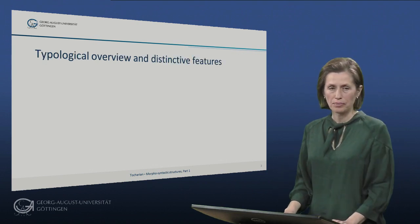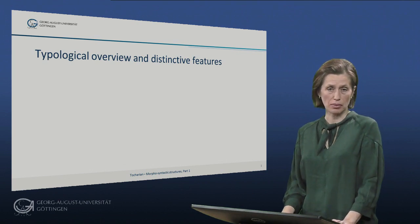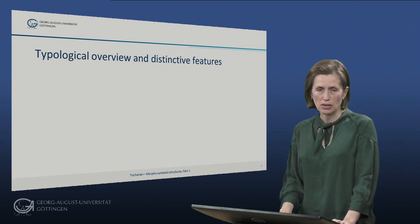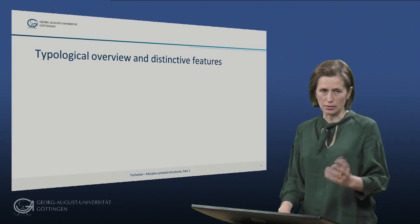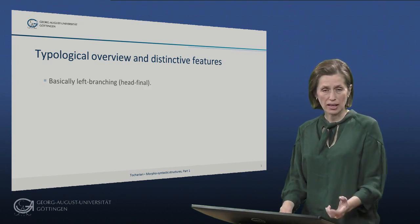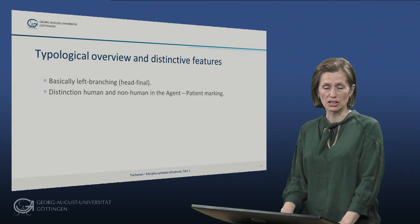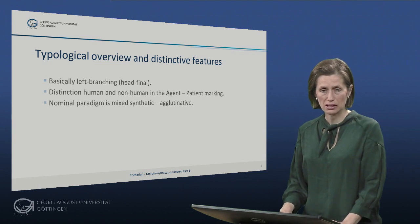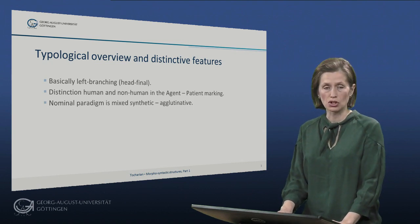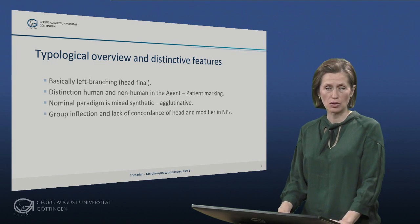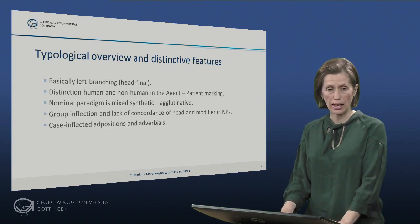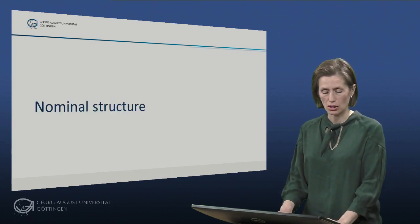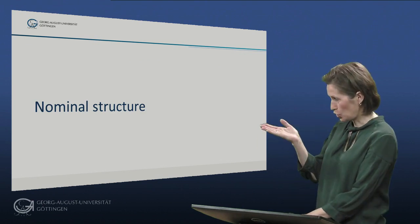Tocharian has a number of specific typological features which are different from most other ancient Indo-European languages. In other aspects, Tocharian is similar to other ancient languages — it is basically left-branching or head-final. There is a distinction between human and non-human in the agent-patient marking. The nominal paradigm is mixed synthetic-agglutinative. There is group inflection and lack of concordance of head and modifier in noun phrases, and they also have case-inflected adpositions and adverbials.